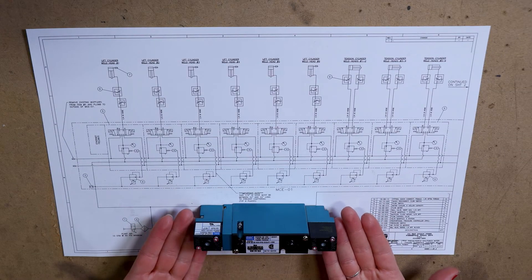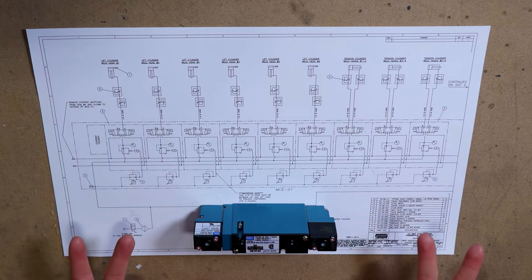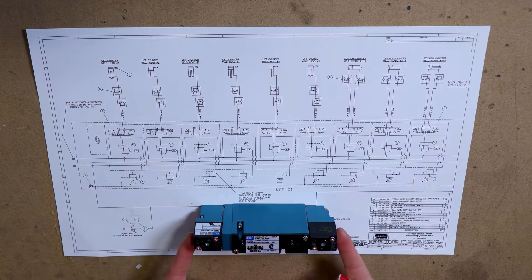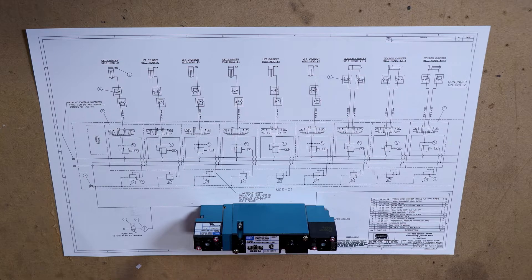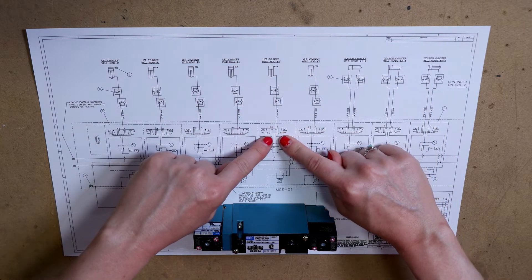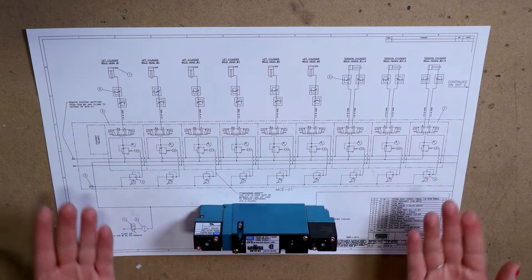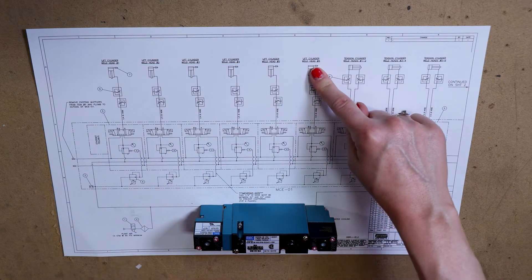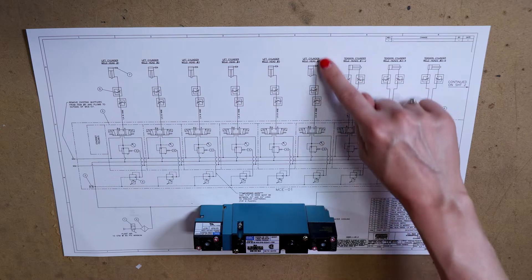Three-position allows the valve to be energized in two separate directions by two separate solenoids, solenoid A and solenoid B. This will then allow the air to flow through one port and exhaust out another, thus allowing the cylinder that is connected to the valve to move back and forth.